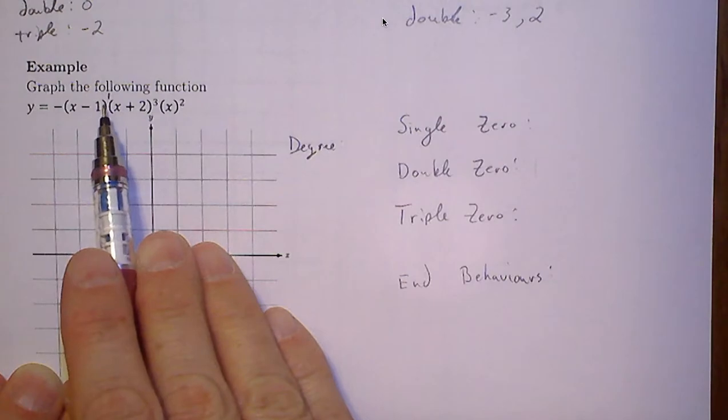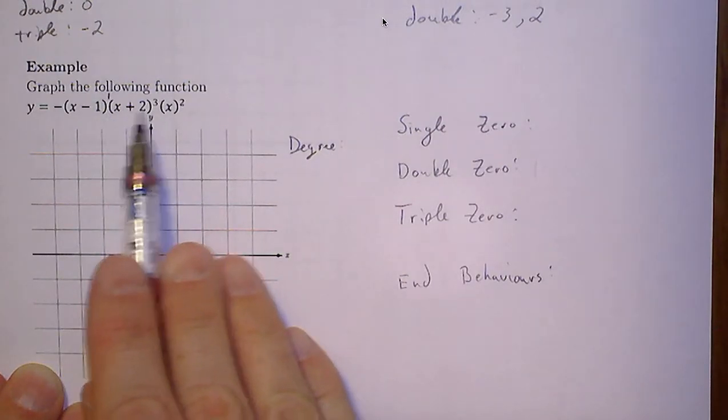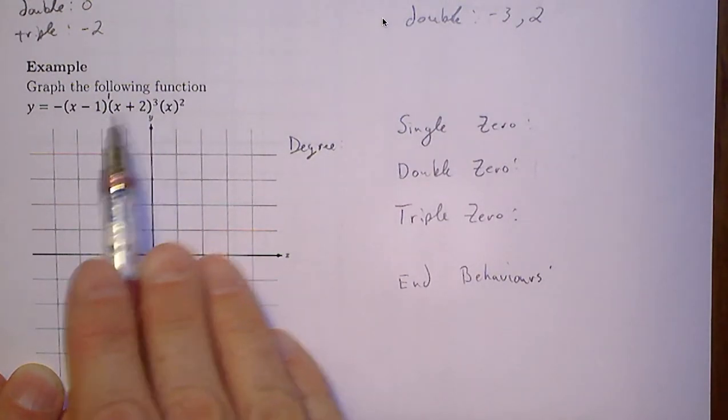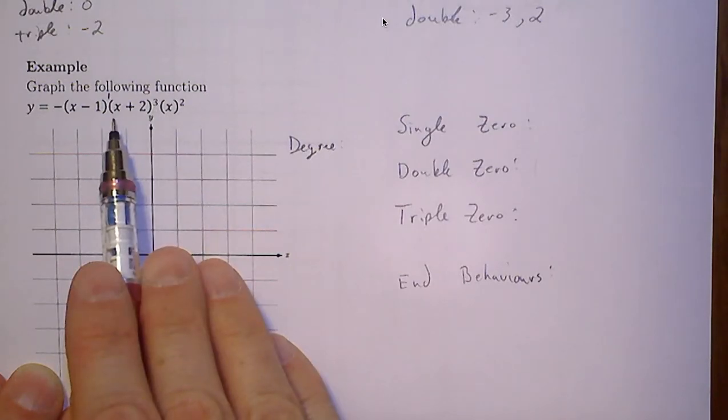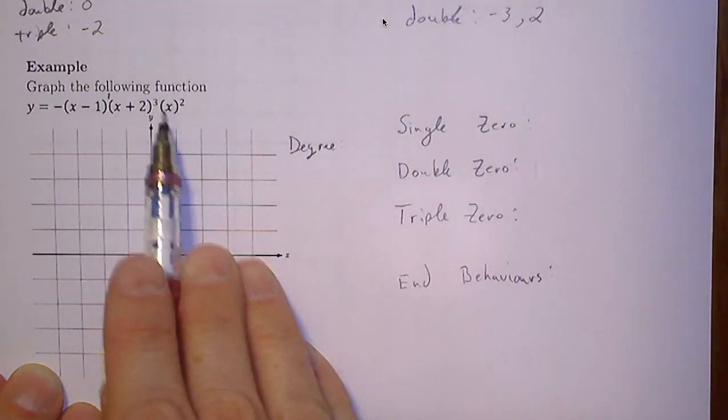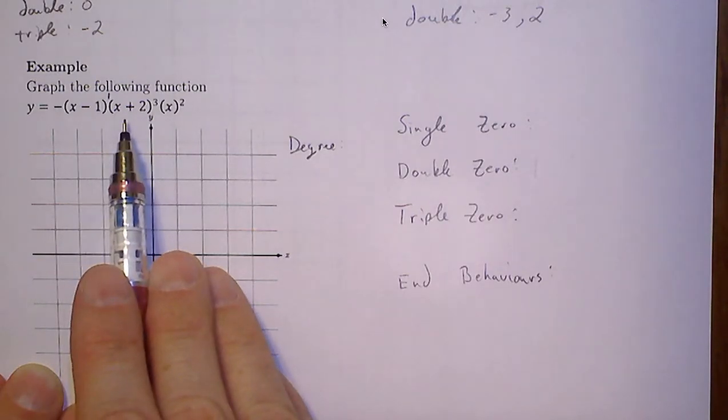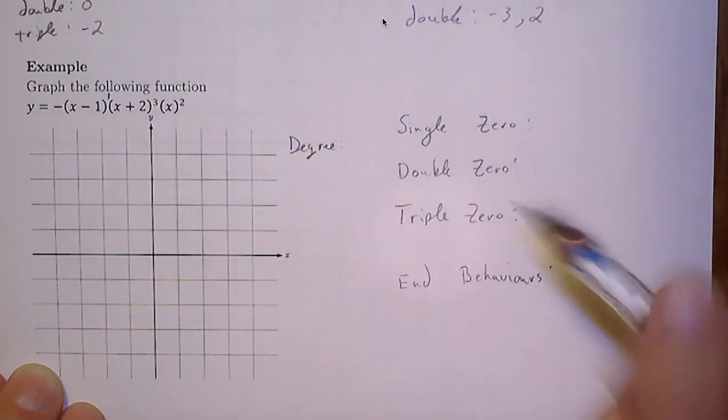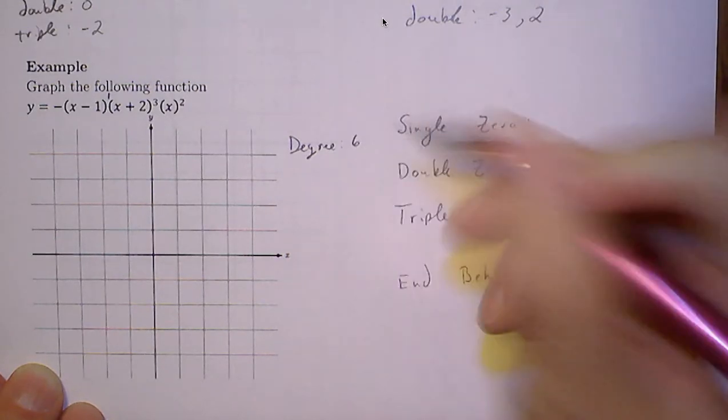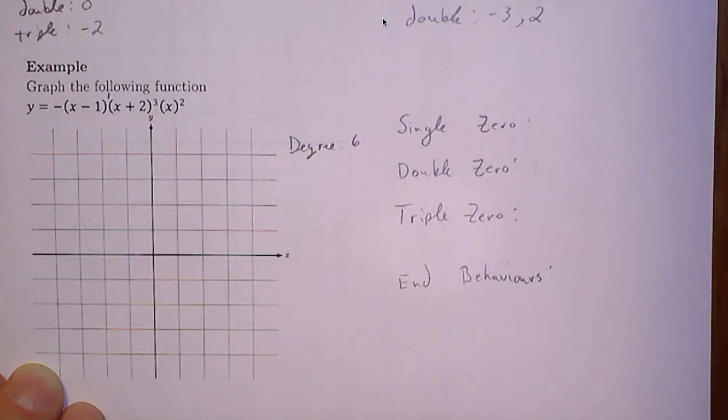Here, it would be x to the power of 1. This term would be raised to the power of 3, so it would be x to the power of 3, x to the power of 2. So x to the power of 1 times x to the power of 3 times x to the power of 2. We add the exponents, so that'd be a six degree equation.